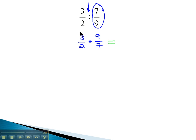There's no reducing, so we'll multiply straight across. 3 times 9 is 27 on the numerator. The denominator is 2 times 7 is 14, and we get our final product of 27 fourteenths.